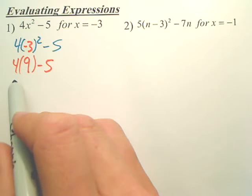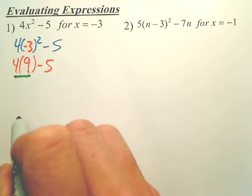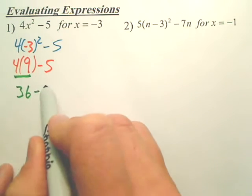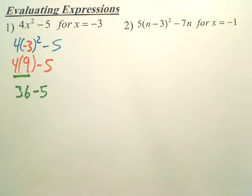Now, order of operations. Multiply, divide. That is 36. Last step, obvious, is just one step.